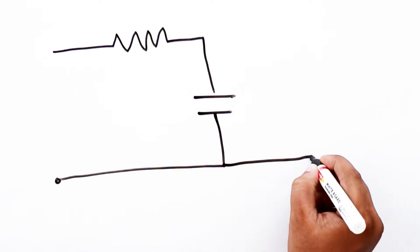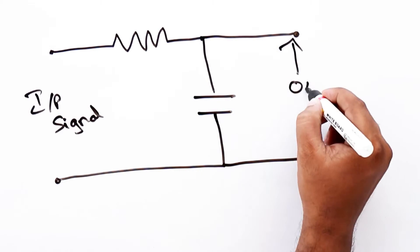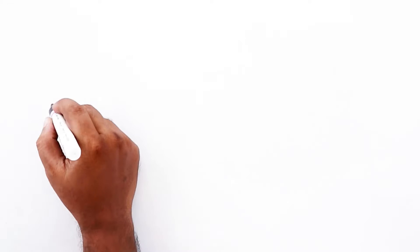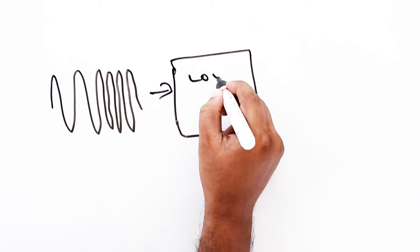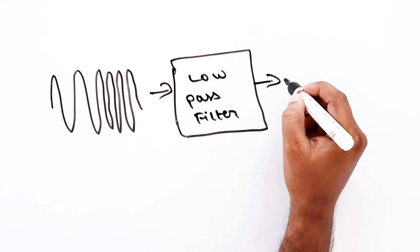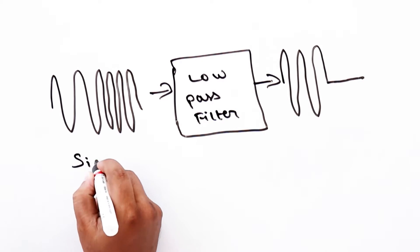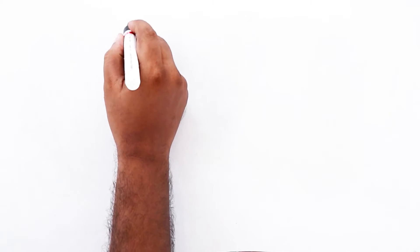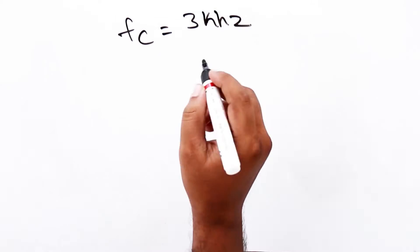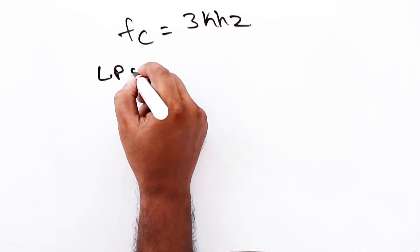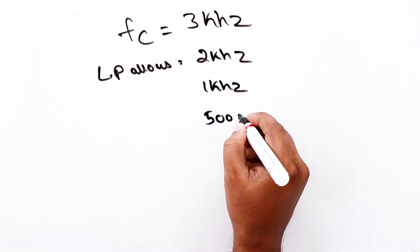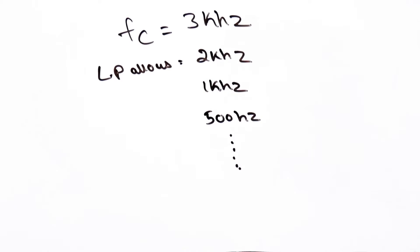Low-pass filter can be constructed using resistor and capacitor in this manner. It allows only the low-frequency signal which is the signals with frequency less than cut-off frequency to pass through and blocks the high-frequency components in the incoming signal. Say, for example, we have a cut-off frequency of 3 kHz, this filter only allows signal frequency less than 3 kHz and blocks the frequency more than 3 kHz.